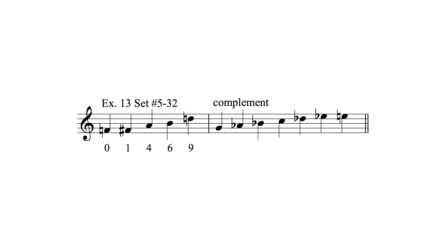The last thing I want to say about the general idea is that sometimes when you're using a PC set, you need variety — so you might use what's called the complement. For example, in example 13, the first set is set 5-32: 0, 1, 4, 6, 9. You might use that for a while and then use the complement, which is simply the notes in the scale that aren't in the set. In the Wikipedia tables, the complement is usually listed to the right — so a three-note set has a nine-note complement, a four-note set has an eight-note complement, and so forth.